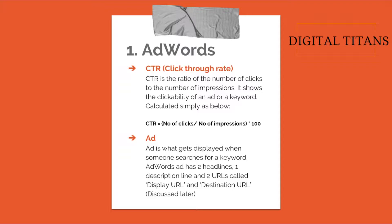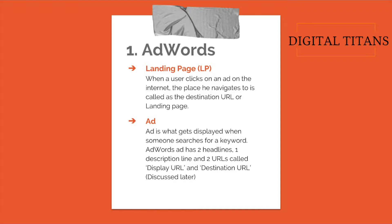Next is the ad itself. When a user searches for a keyword on Google Search, they see a set of ads. An ad has a specific format: two headlines, a description line to describe your product or service, and two URLs. The URL visible on the ad is called the display URL, and the URL you land on after clicking the ad is called the destination URL. There will be a separate session on ad formats and how to write better ad text.